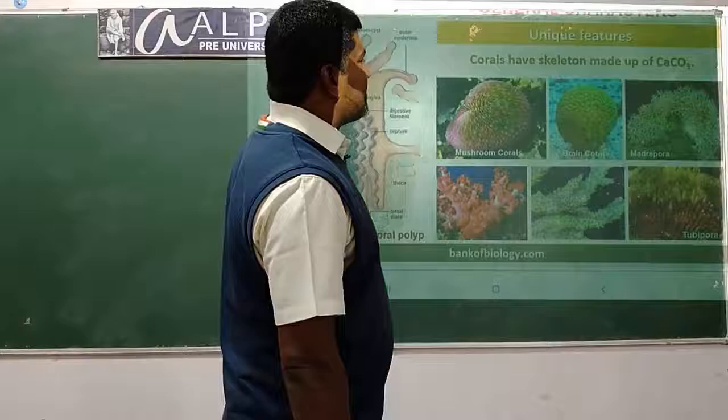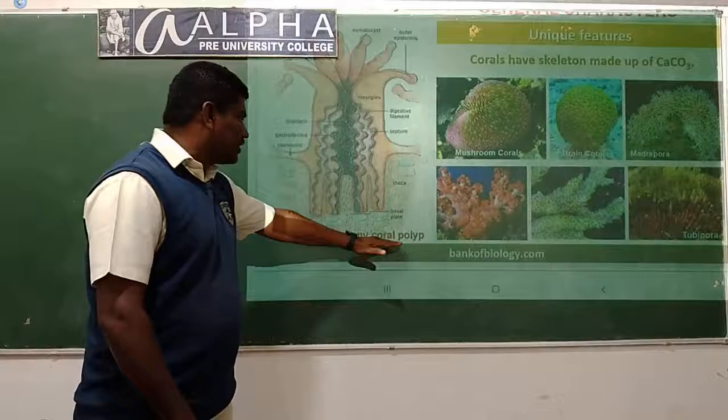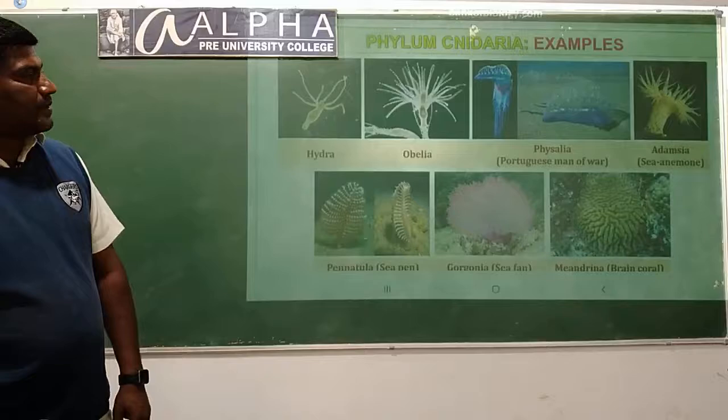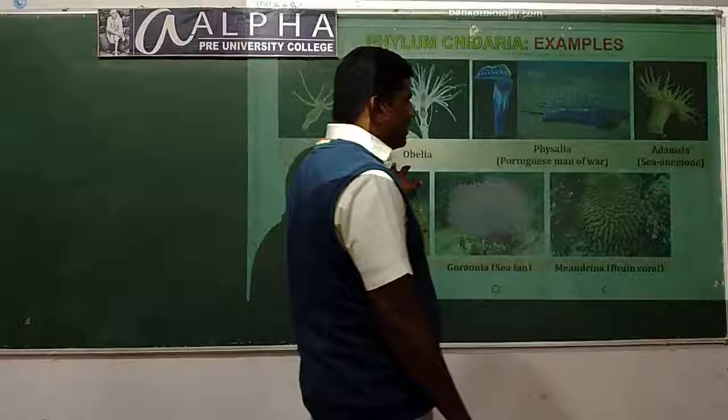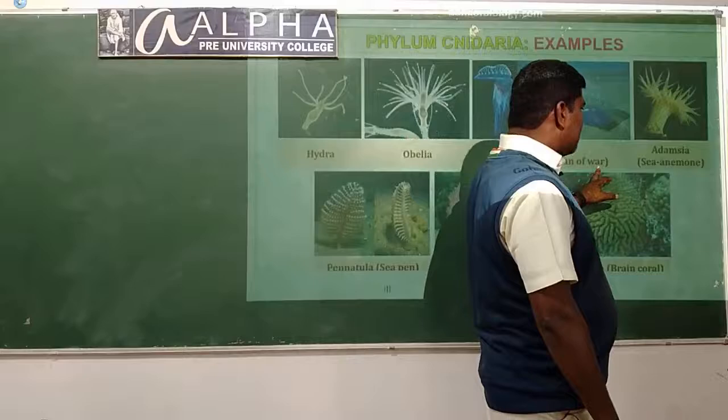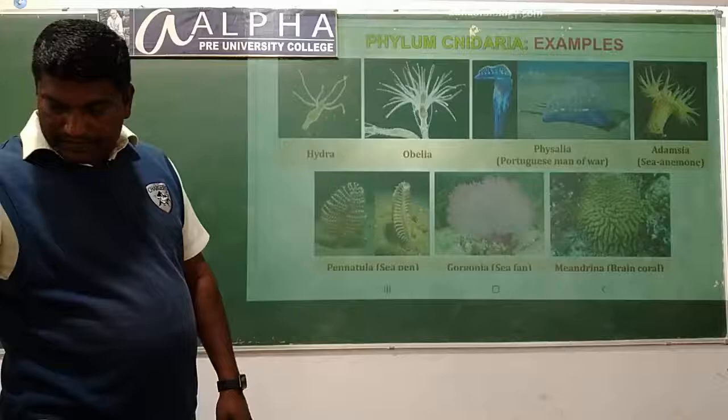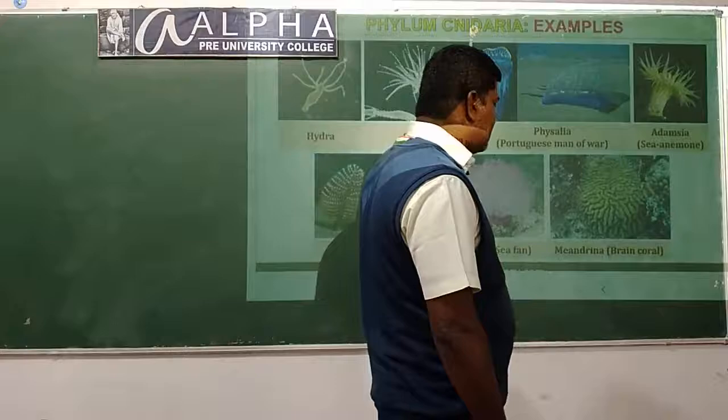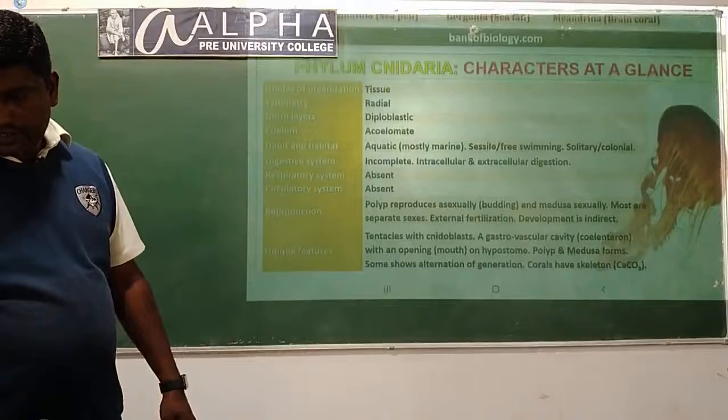Corals have a skeleton which is made up of calcium carbonate. The examples which come under Cnidaria are: Hydra, Obelia, Physalia (commonly called the Portuguese man-of-war), Adamsia, sea anemone, sea fan, brain coral, and others.